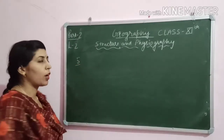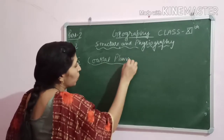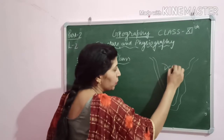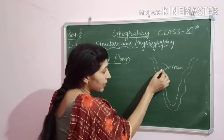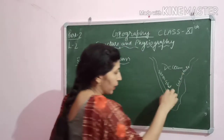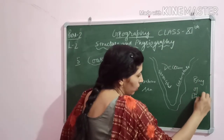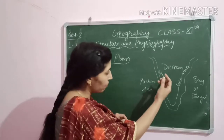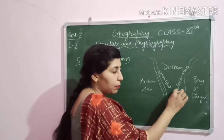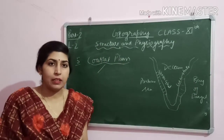The 5th physiographic division of India is coastal plains. As you know, this is the Deccan Plateau, and in the Deccan Plateau this part is the Western Ghats and this part is the Eastern Ghats — we already read about that. Here is the Arabian Sea and the Bay of Bengal. The part between the Western Ghats and the Arabian Sea is the western coastal plain, and between the Eastern Ghats and the Bay of Bengal is the eastern coastal plain. Let's study them in detail.